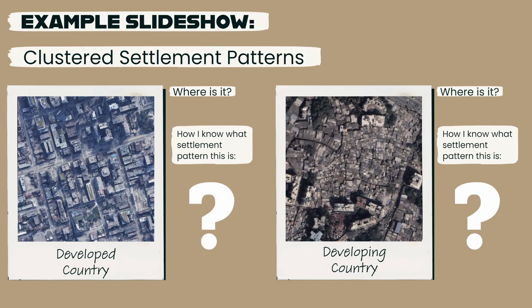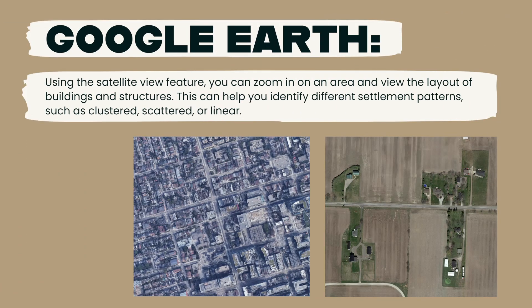Once you have found the examples, you'll need to take screenshots and make a short slideshow presentation. In your presentation, you'll have to explain the location of your examples and how you know each one is either clustered, scattered, or linear. Google Earth is one tool you can use to find settlement patterns in different regions. Using its satellite view, you can zoom in on an area and view the layout of buildings and structures, helping you identify different settlement patterns.